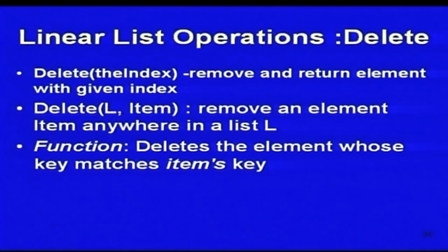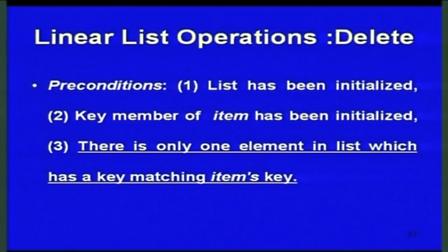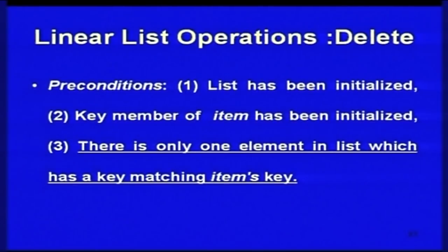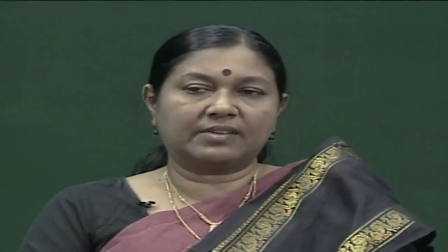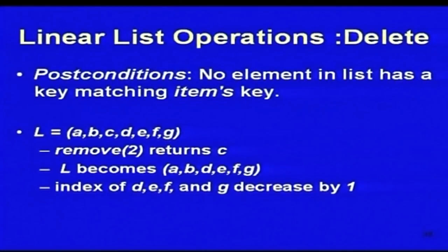Next is delete — remove and return the element with a given index. You delete the element whose key matches the item's key. Preconditions for delete: you must have a list, the key member of the item must be initialized, and no duplicates are assumed. The post-condition is that no element in the list has a key matching the item's key. For example, given [a, b, c, d, e, f, g] and calling remove(2), it returns 'c' (index 2), and the list becomes [a, b, d, e, f, g]. The indices of d, e, f, g all decrease by 1.